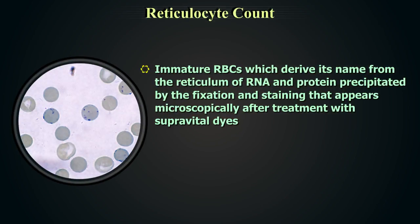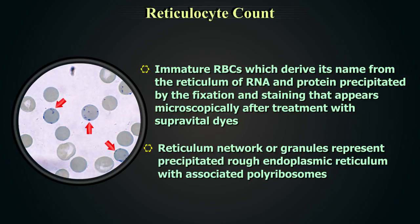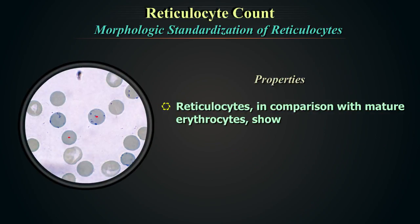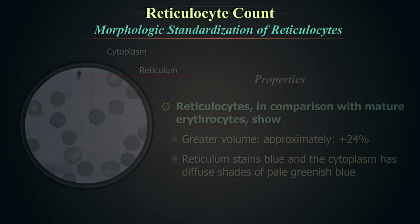Reticulocytes are immature red blood cells. They derive their name from the reticulum of RNA and protein precipitated by fixation and staining, which appears microscopically after treatment with supravital dyes. The reticulum network or granules represent precipitated rough endoplasmic reticulum with associated polyribosomes. Reticulocytes show approximately 24% greater volume compared to mature erythrocytes. The reticulum stains blue and the cytoplasm has diffuse shades of pale greenish blue.